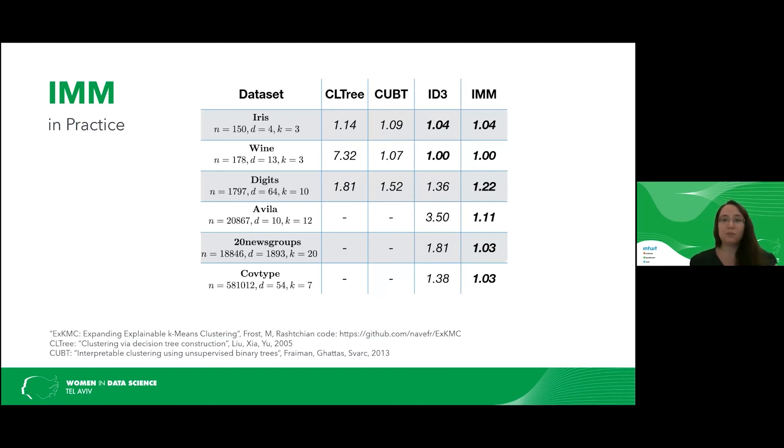So now, how does IMM behave in practice? So we compare the algorithm, the IMM, to three other algorithms that return some decision tree for a clustering algorithm. So we compare the results on a few data sets, on small ones and on larger ones. And what we want in each term is simply the approximation. We want this value to be as small as possible, hopefully as close as possible to one. What we saw is that our algorithm, the IMM algorithm, performs really well and actually beats its competition. And also notice that the number that we get is really small. It's really close to one. For example, we have 1.11 or 1.22, pretty small.